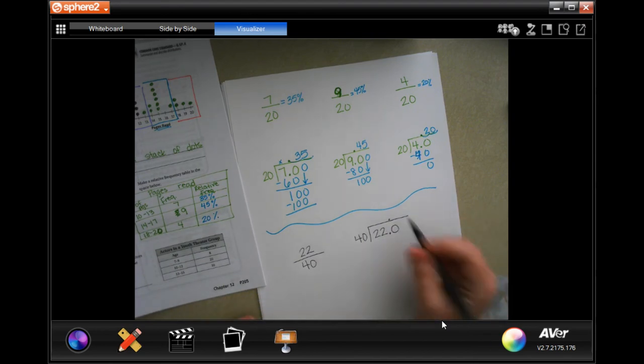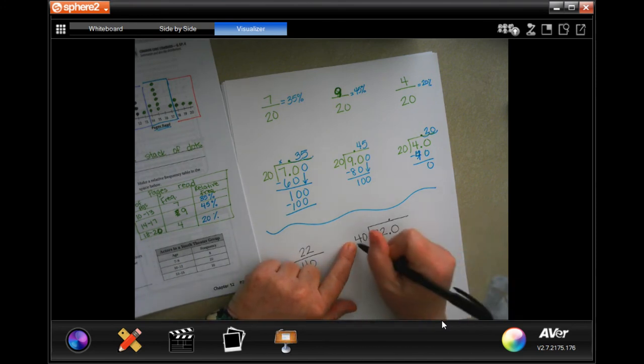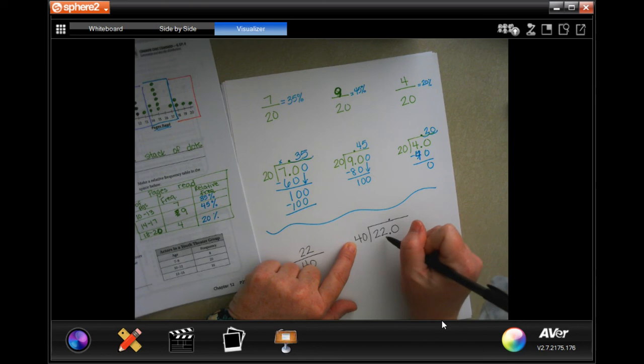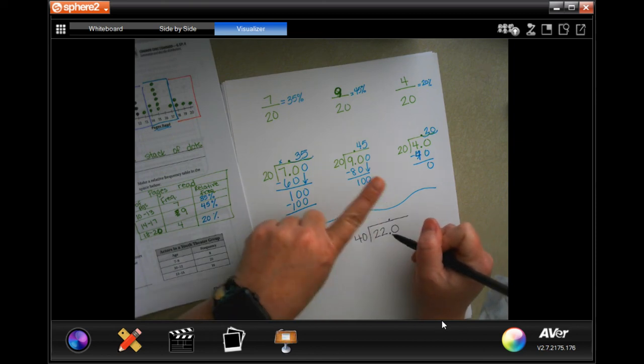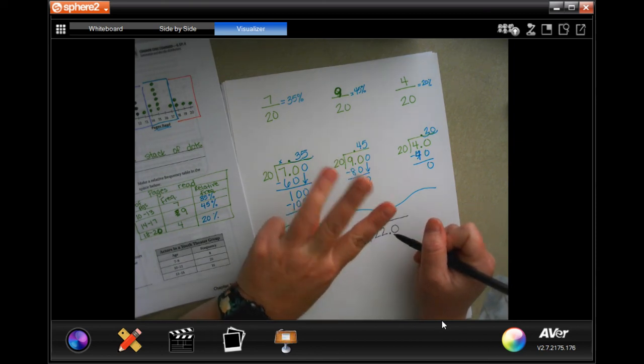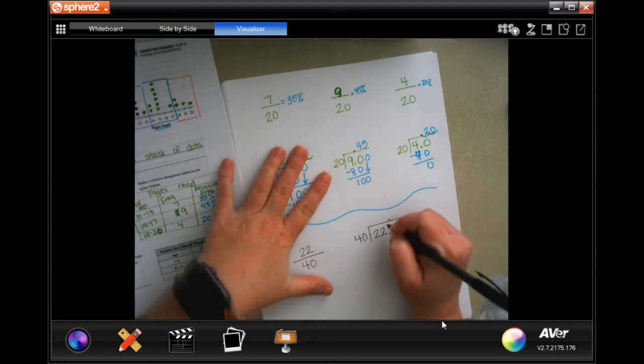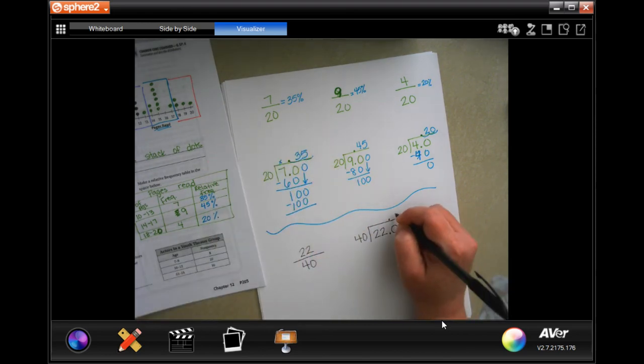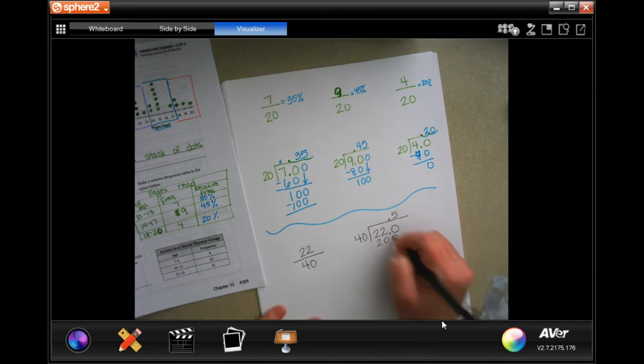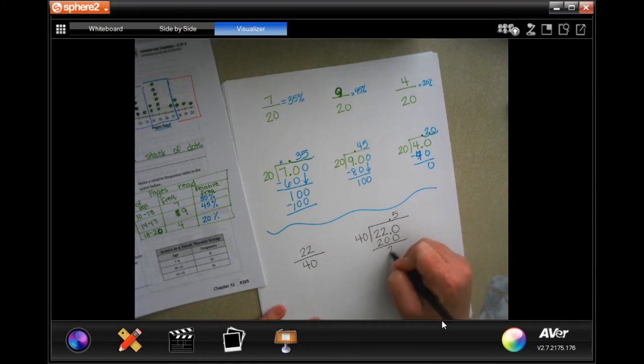So now I'm going to count by 4 until I get as close to 22 as I can. So 4, 8, 12, 16, 20. That's probably going to be about as close as we're going to get, is that 5 times, which is going to give us 200. 5 times 0 is 0, 5 times 4 is 20. So now I have 20.